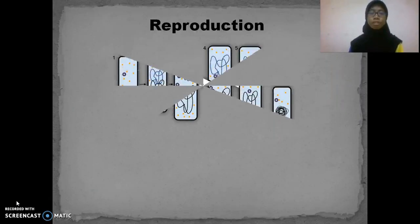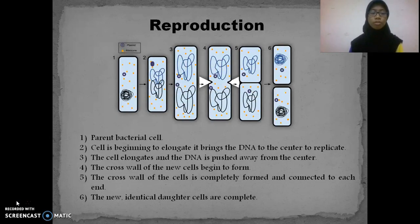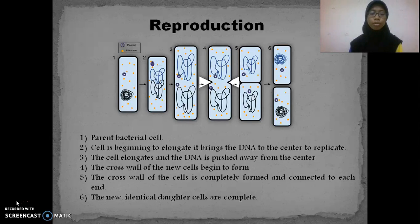The reproduction. Vibrio parahaemolyticus has six stages of cell reproduction. In the first stage, it starts from a parent cell. In the second stage, the cell begins to elongate and brings the DNA to the center to be replicated. In stage four, the cross wall of the new cells begins to form. In stage five, the cross wall is completely formed and connected to each end of the cells. In the last stage, new identical cells are completely formed.